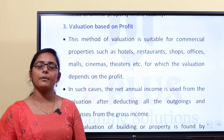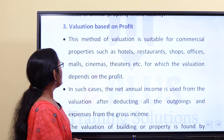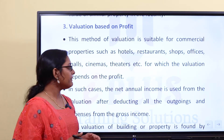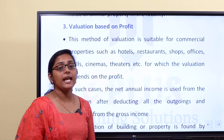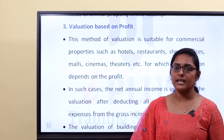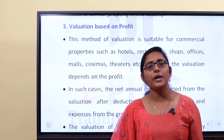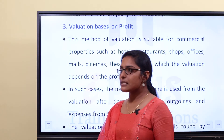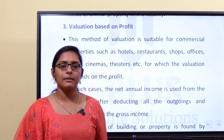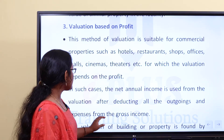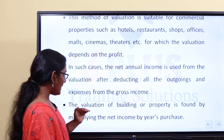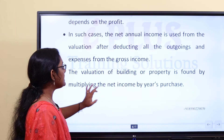Valuation based on profit is the third method. This method is suitable for commercial properties such as hotels, restaurants, shops, offices, and malls. In such cases, the net annual income is used for valuation after deducting all outgoings and expenses from the gross income. The valuation of the building or property is found by multiplying the net income by Year's Purchase.